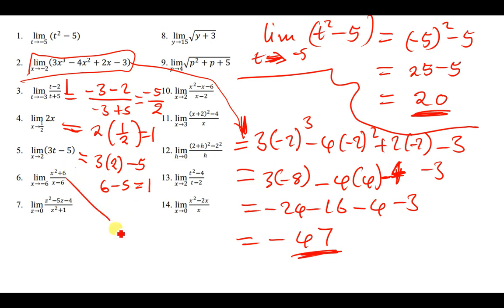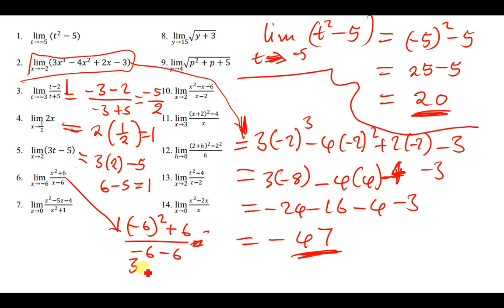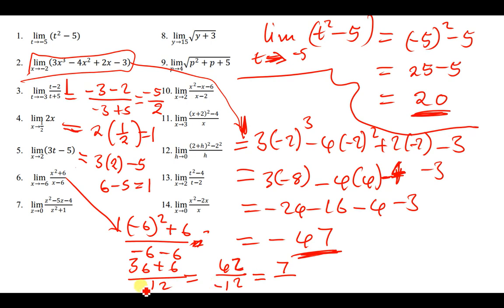For the next example, we replace x with -6: we get (-6)² + 6 over (-6 - 6), which is 36 + 6 over -12, giving 42 over -12. Simplifying by dividing both by 6, we get 7 over -2, so the answer is -7/2.